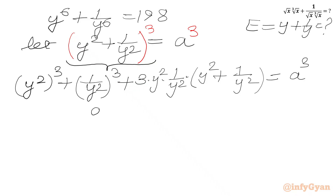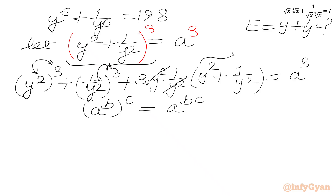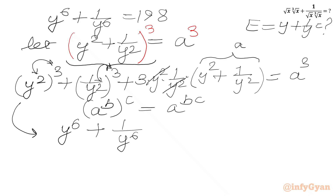Using the exponent law (a^b)^c = a^(bc), multiplying 2 with 3 gives power 6 on both terms. The y² and 1/y² cancel in the middle term, and y² + 1/y² equals a by our substitution. So we get y^6 + 1/y^6 + 3a = a³.